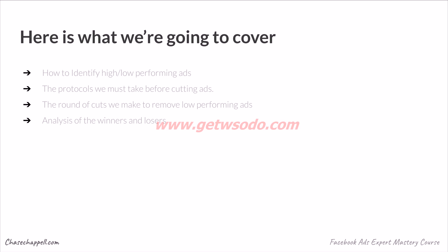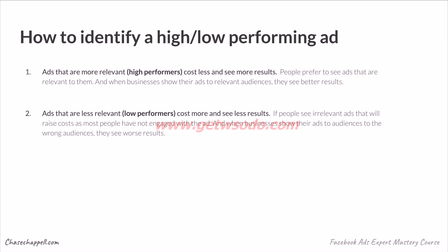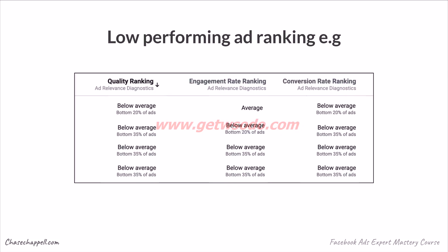How do we identify a high or low performing ad? Ads that are more relevant — high performers — cost less and see more results. People prefer to see ads that are relevant to them, and when businesses show their ads to relevant audiences they see better results. Ads that are less relevant — low performers — cost more and see less results. If people see irrelevant ads, it raises costs, and businesses showing ads to the wrong audiences see the worst results.